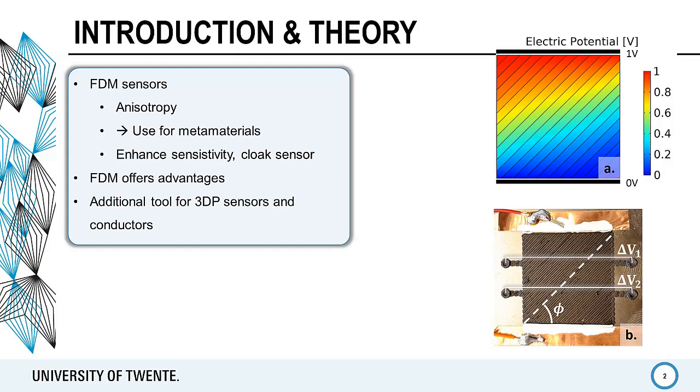Metamaterials have been used in sensors to enhance sensitivity and to, for example, cloak the sensor from the environment. By making metamaterials, FDM offers advantages in cost and geometric freedom with respect to current manufacturing methods. We believe that 3D printed metamaterials offer an additional tool for the realization of 3D print sensors and conductors.